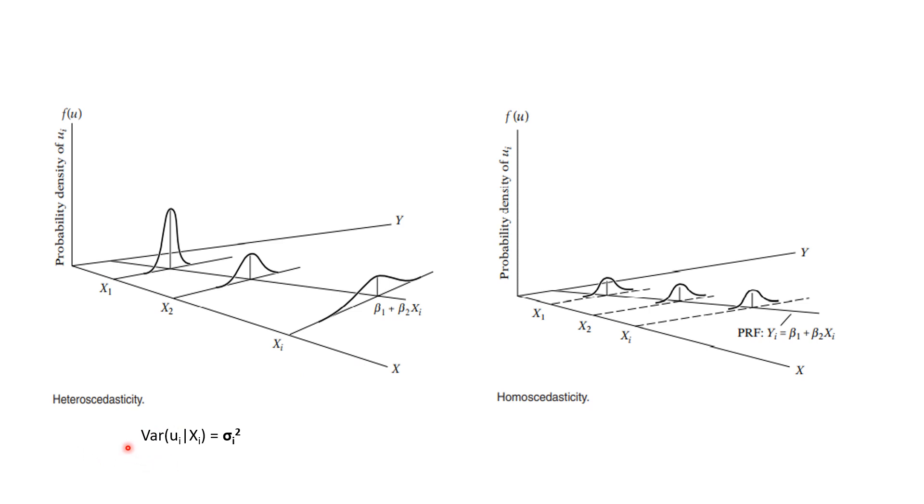The variance in case of heteroscedasticity is written as sigma i square. The subscript i indicates that the variance is not constant.